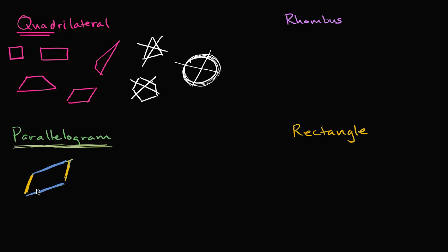So this is a parallelogram. Even your classic square is a parallelogram — we'll talk more about what makes a square special. It's a special type of parallelogram because this side is going in the same direction as that side, and this side is parallel to that side.